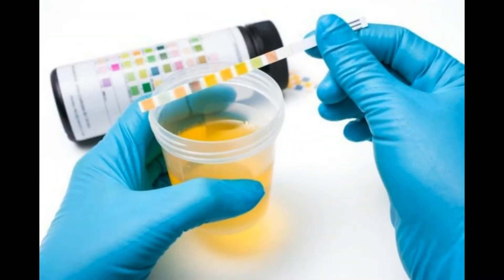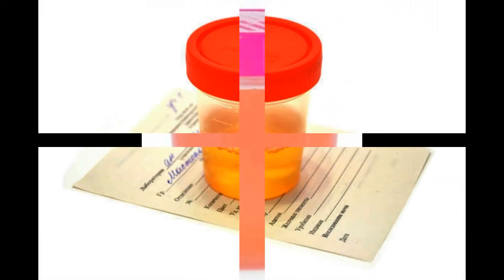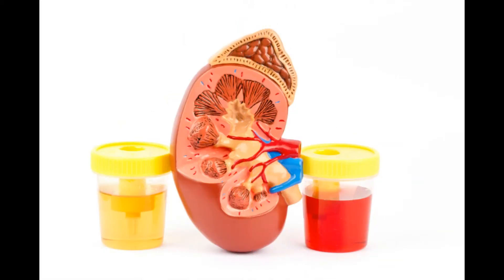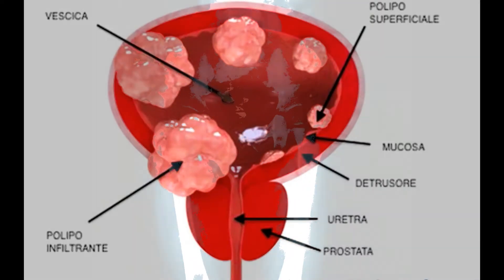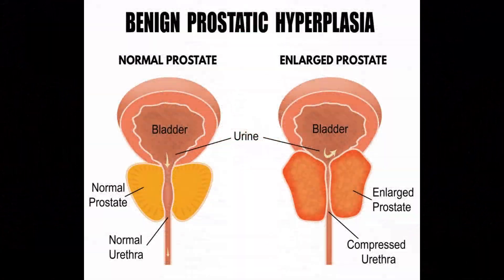It can originate from any region of the urinary tract. When it's microscopic we use a small test to detect it, but when it's gross hematuria you can see it with the naked eye. It can be caused by kidney diseases or bladder disease, infection, or sometimes tumors. These tumors can be either benign like polyps, or malignant like cancer.